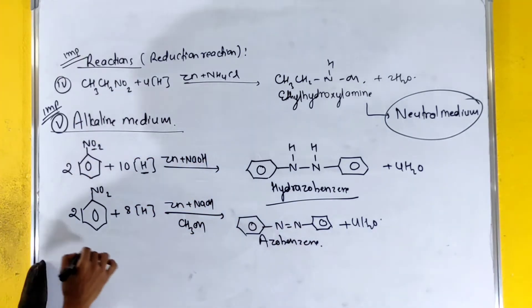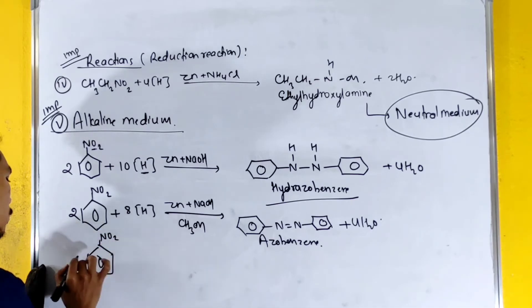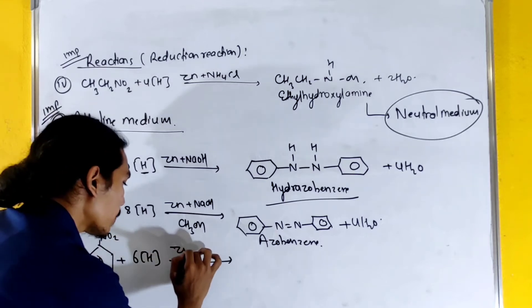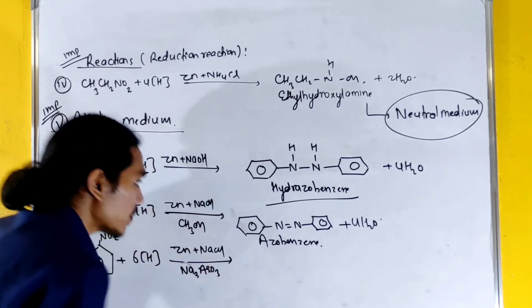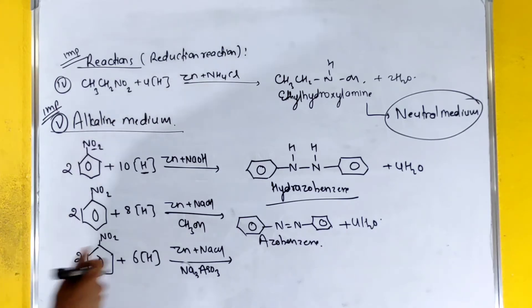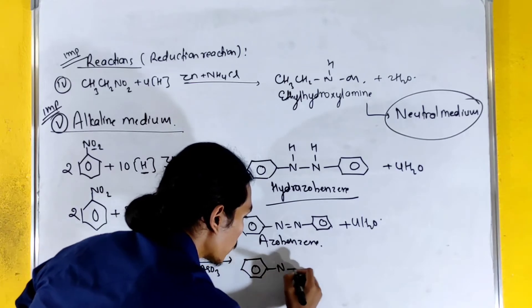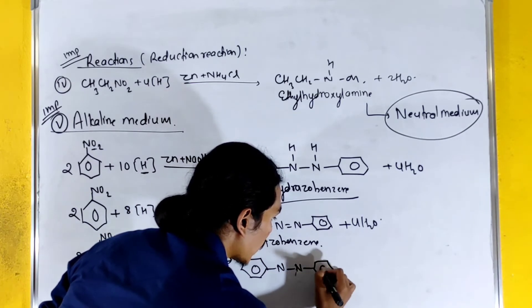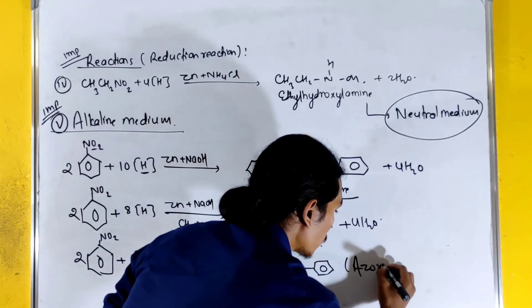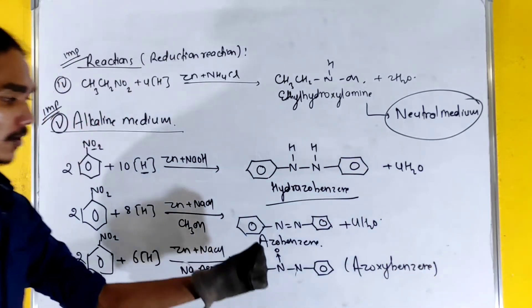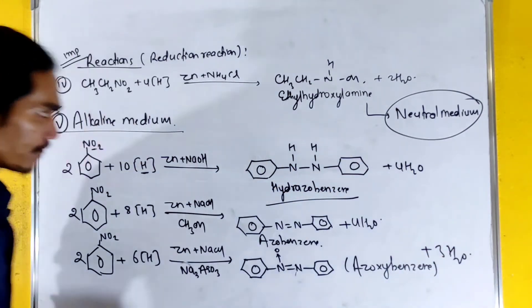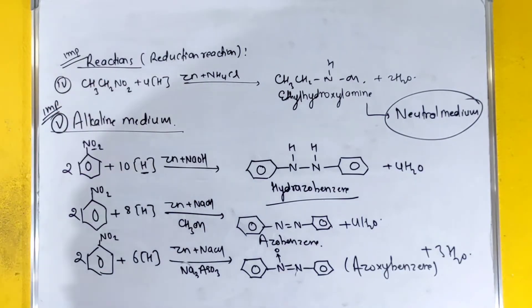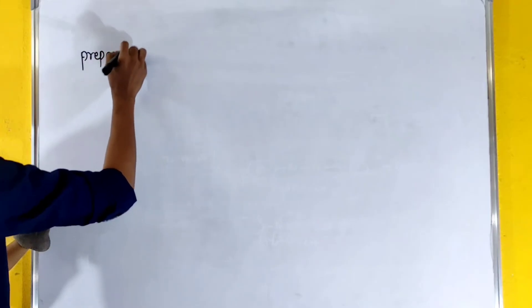We can write this as azobenzene. With Zn or NaOH, we get azobenzene. With NaOH specifically, we get azoxybenzene formation — a different product involving an N-oxide linkage.